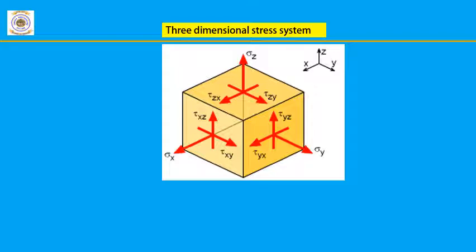In the figure, along the x-direction, σx, τxy, and τxz are acting — σx is the normal stress while τxy and τxz are the shear stresses. Similarly, along the y-axis, one normal stress and two shear stresses are acting, and along the z-axis, one normal stress and two shear stresses are acting. Therefore the normal stresses are σx, σy, and σz, whereas the shear stresses are τxy, τxz, τyz, τzx, and τzy.